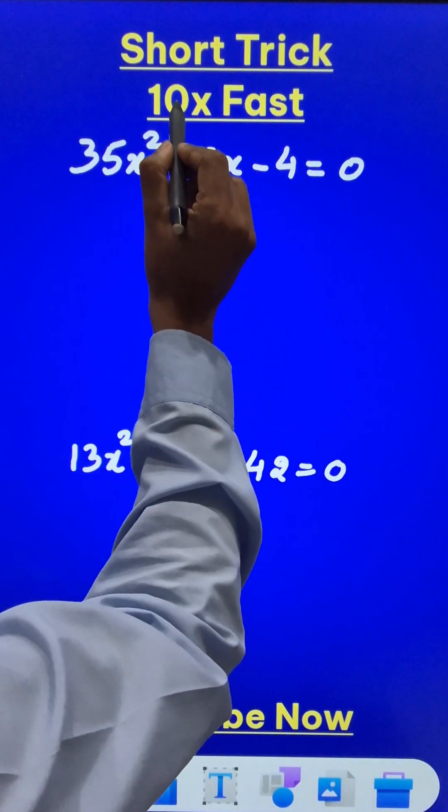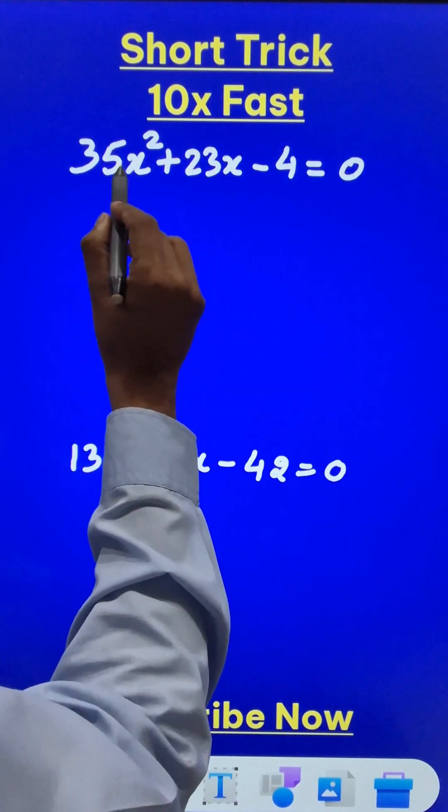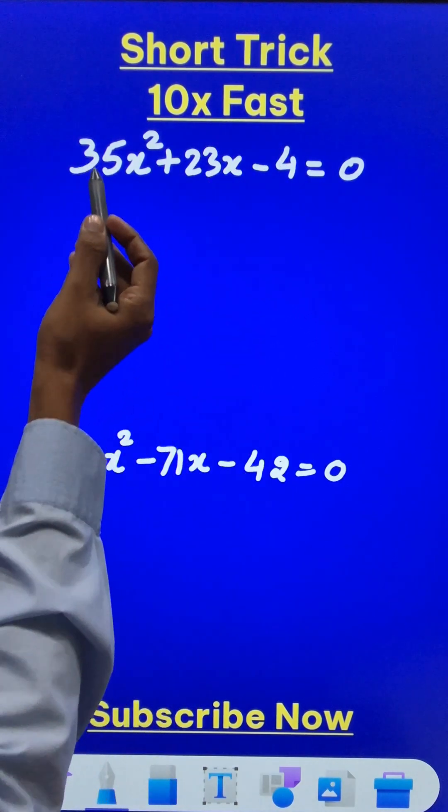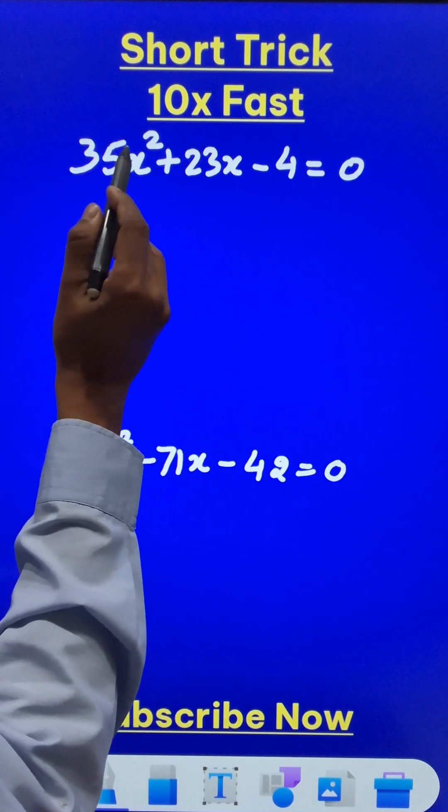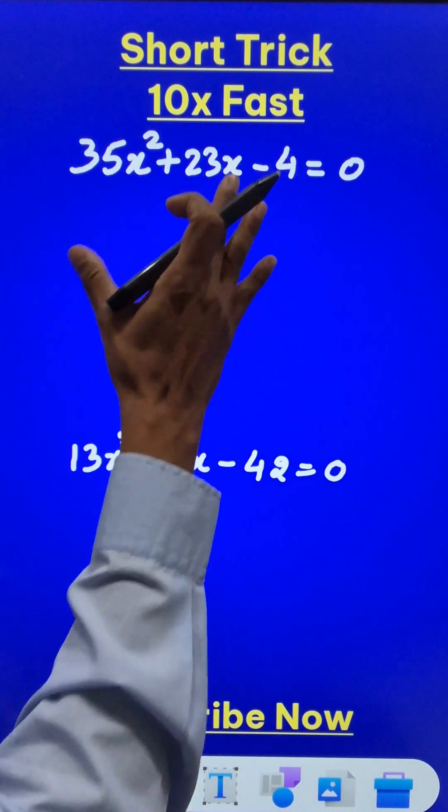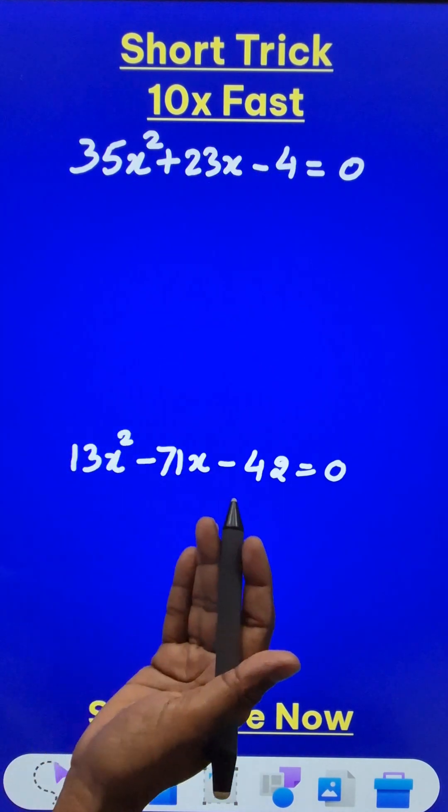Here is the shortest trick which is 10x faster to solve some quadratic equations which has huge coefficients. You can see two quadratics written here: 35, 23, 13, 71, 42. They are big coefficients and therefore solving them can be a real headache.